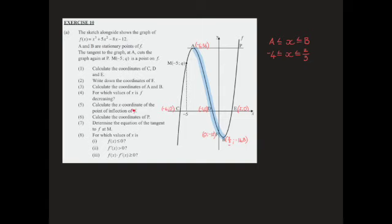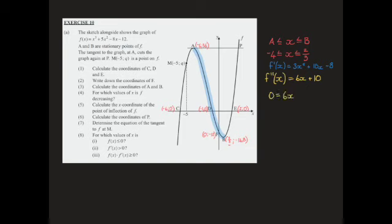Next, we're asked to calculate the coordinate of the point of inflection of f. We know that in order to calculate the point of inflection, we need to find the second derivative. The first derivative is 3x squared plus 10x minus 8, so the second derivative is going to be 6x plus 10. At the point of inflection, our second derivative equals 0, and that allows us to calculate the value for x at that point — x is going to be negative 5 over 3. The question only asks for the x-coordinate of the point of inflection, so we can leave it like that.